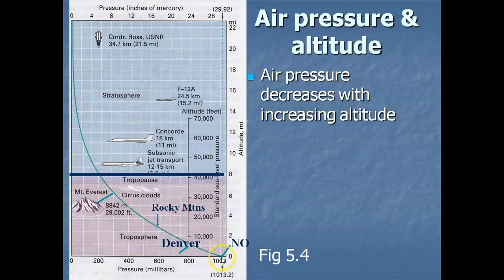We usually have pretty high air pressure. High pressure moving in would give readings above 1,013 — 1,014, 1,015, 1,016, and on. Low pressure moving in would give a lower reading from our standard sea level air pressure — 1,012, 1,011, and so on.